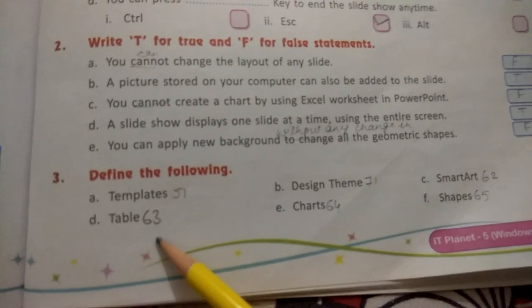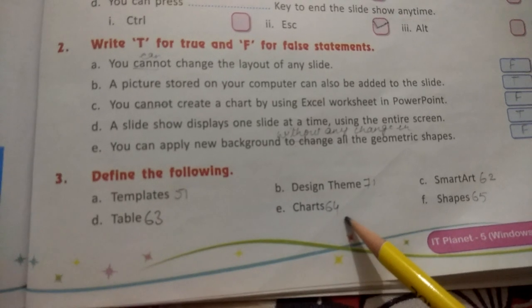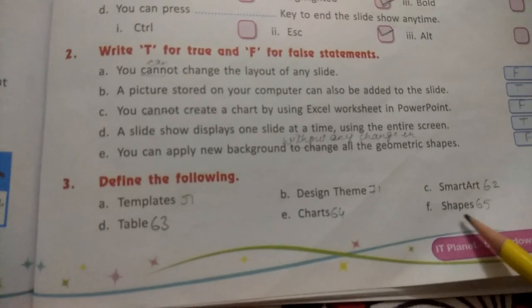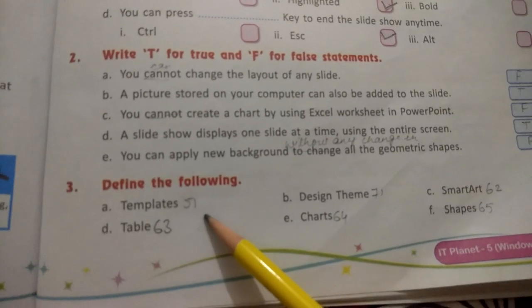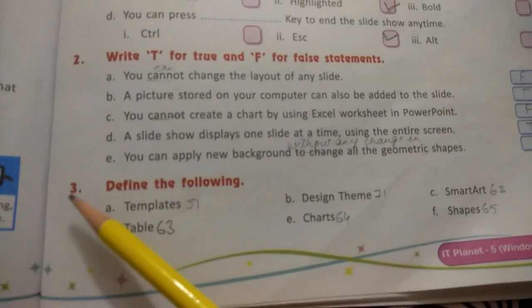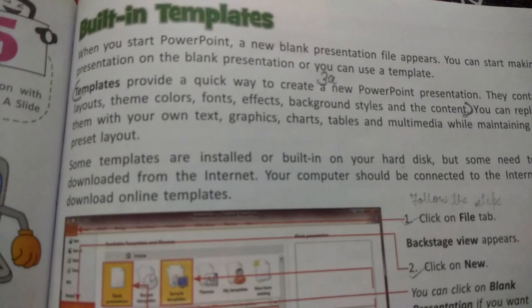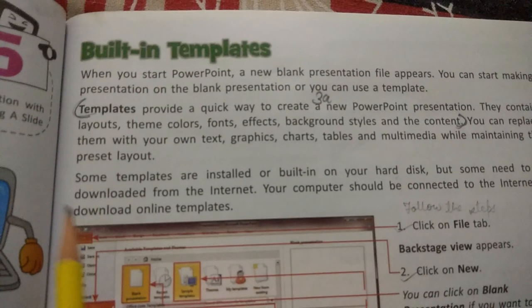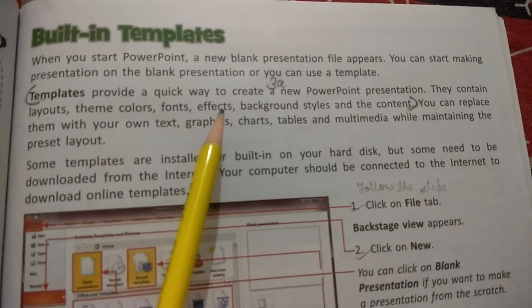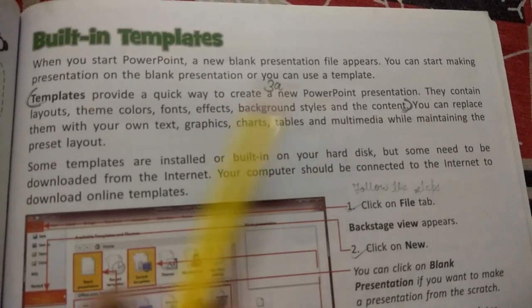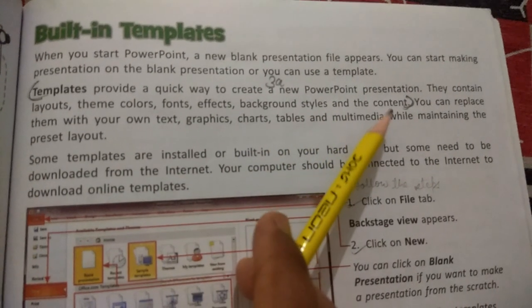Number A template - write down page number 51. Number B design theme - write down 71. C SmartArt - write down 62. D table - write down 63. E charts - write down 64. And F shapes - write down 64-65. Please take out page number 51 for the answer A. Underline the lines on page number 51, paragraph number two. Templates provide a quick way to create a new PowerPoint presentation. They contain layout, theme, color, font, effect, background styles, and the contents.